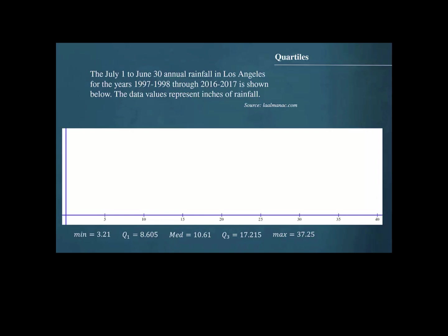It is important that the box plot is scaled on a horizontal axis. Here is a horizontal axis scaled from 0 to 40, which will be convenient since our minimum value is 3.21 and our maximum value is 37.25. We begin by drawing a vertical line above the horizontal axis at the minimum value of 3.21 and labeling it.